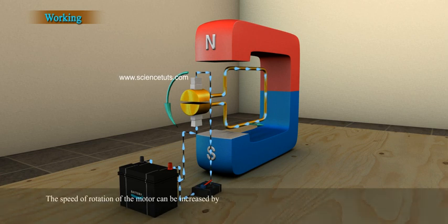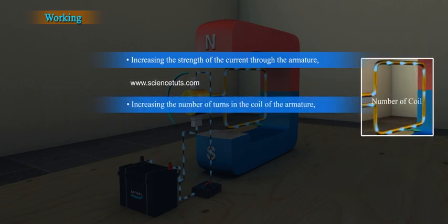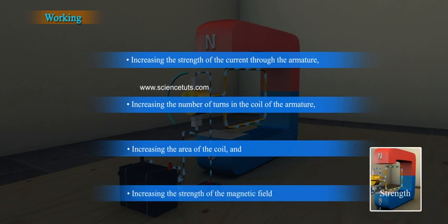The speed of rotation of the motor can be increased by increasing the strength of the current through the armature, increasing the number of turns in the coil of the armature, increasing the area of the coil, and increasing the strength of the magnetic field.